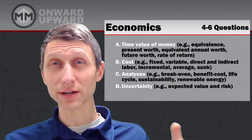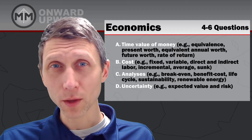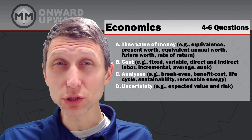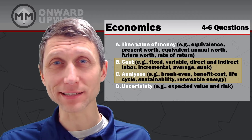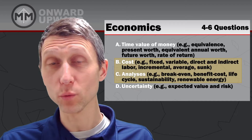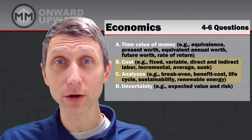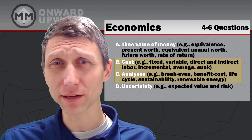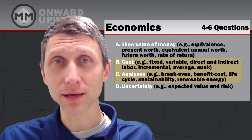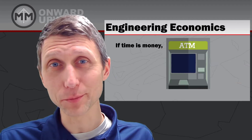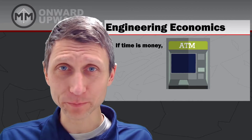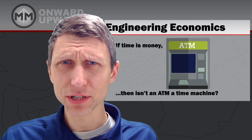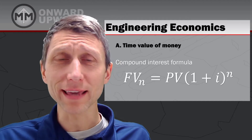In the FE review, we're going to look at the time value of money, cost analyses, and uncertainty. Cost and cost analyses go together because whoever you work for is eventually going to want to know how much it's going to cost and whether it makes sense. And just for a bit of humor: if time is money, then an ATM is a time machine.